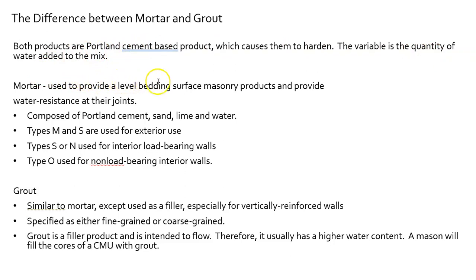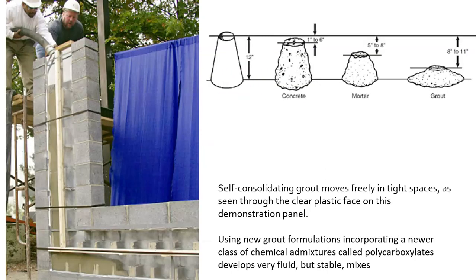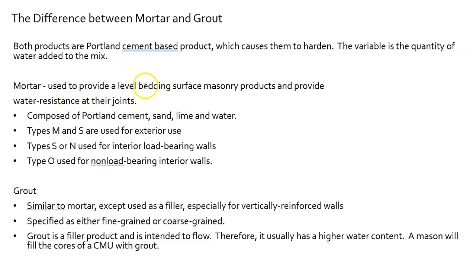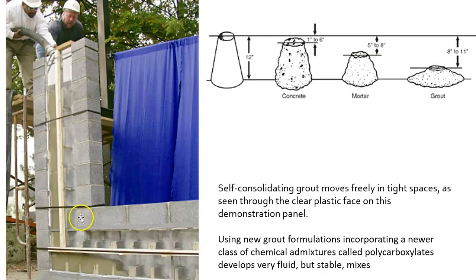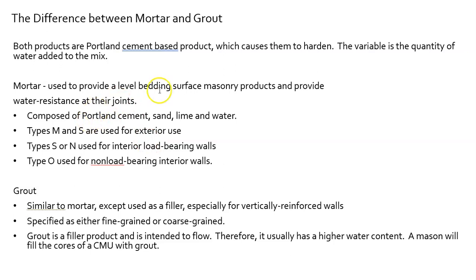Mortar is used to provide a level bedding surface for masonry products and provide water resistance at their joints. There's a vertical mortar joint and a horizontal mortar joint. Each course of masonry can be easily leveled and doesn't rely on the course below. Mortar contains Portland cement, sand, lime, and water, and there are different types for different applications: exterior, interior, load-bearing, and non-load-bearing.